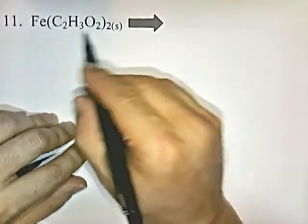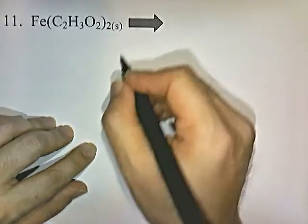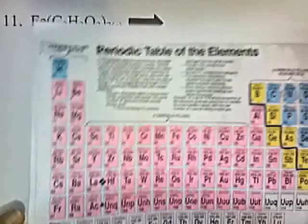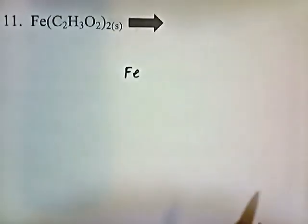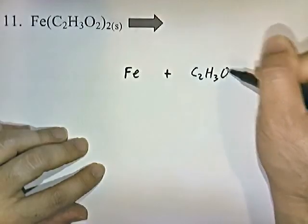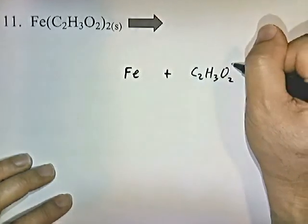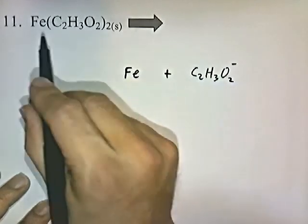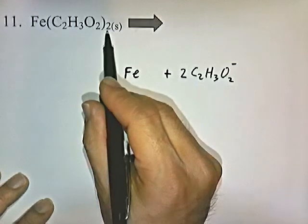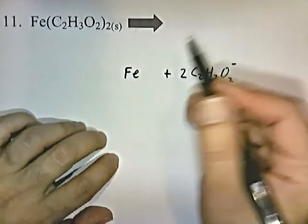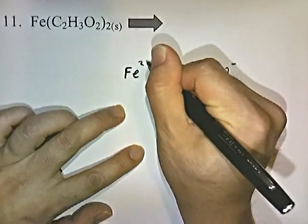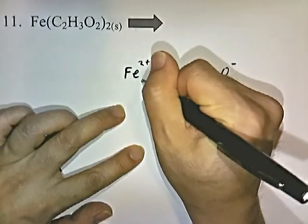Iron acetate: C2H3O2 is another way of writing the acetate ion. Fe is iron — a transition element with possible plus 2 and plus 3 oxidation states, so we don't know yet. You should have memorized that acetate has a negative 1 oxidation number. There are 2 acetates attached to 1 iron, so we swing the 2 in front of the C2H3O2. Two negative 1 charges gives a total negative charge of negative 2, so the iron has to be positive 2.